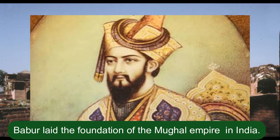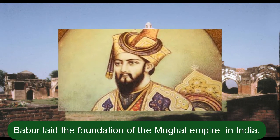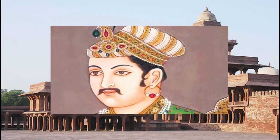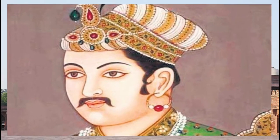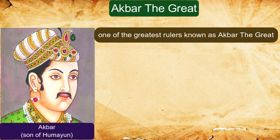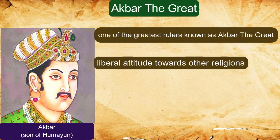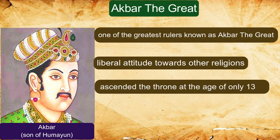Babar laid the foundation of the Mughal dynasty in India, but it was Akbar who provided stability to it. Akbar was one of the greatest rulers, known as Akbar the Great. He ascended the throne at the age of only 13.